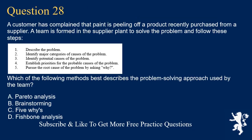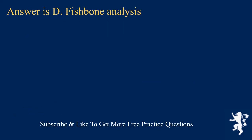Question 28. A customer has complained that paint is peeling off a product recently purchased from a supplier. A team is formed in the supplier plant to solve the problem following these steps: 1. Describe the problem. 2. Identify major categories of causes. 3. Identify potential causes. 4. Establish priorities for probable causes. 5. Pursue the root cause by asking why. Which of the following methods best describes this problem-solving approach? A. Pareto analysis. B. Brainstorming. C. Five whys. D. Fishbone analysis. Answer is D. Fishbone analysis.